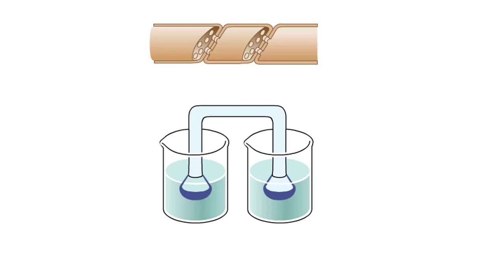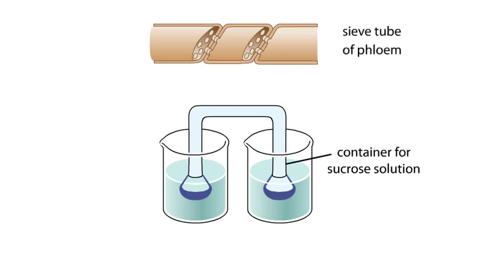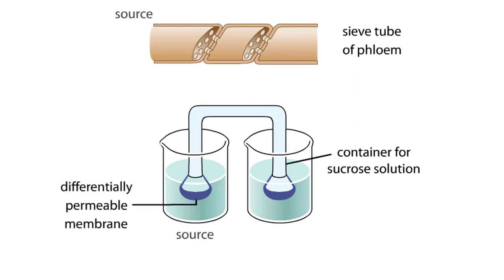This apparatus of beakers and funnels simulates the flow of a sucrose solution in the phloem of a plant. The funnels and connecting tube represent a sieve tube of the phloem. Differentially permeable membranes cap the funnels at the source and sink ends, allowing water, but not sucrose, to cross.